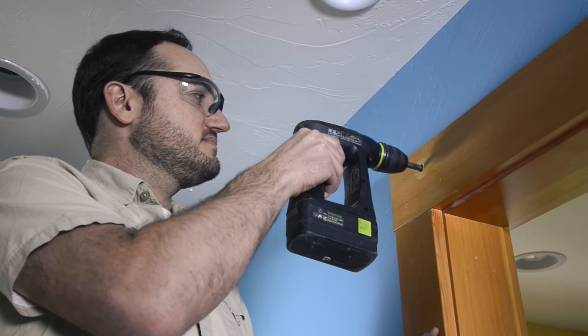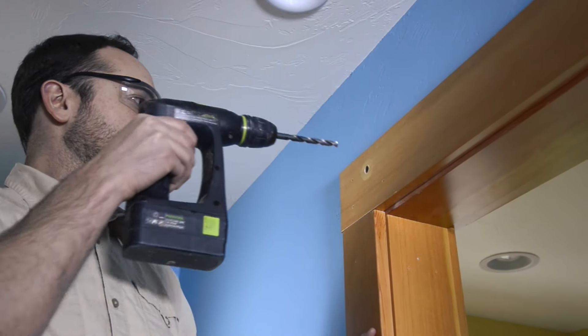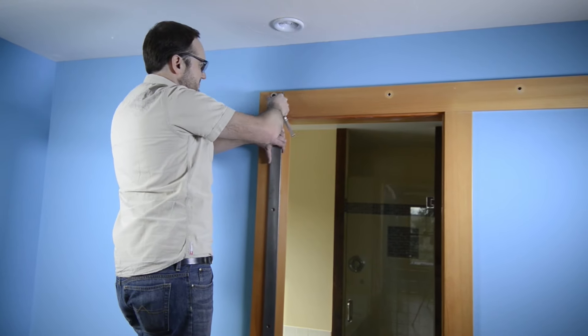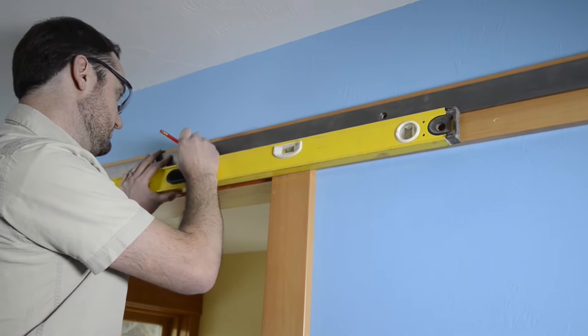After pre-drilling a 1/8-inch pilot hole, drill a second hole 3/8-inch in diameter for your first mounting bolt. Loosely screw your first bolt into place, then hold up your track, check to make sure it's level, and mark the remaining mounting holes.